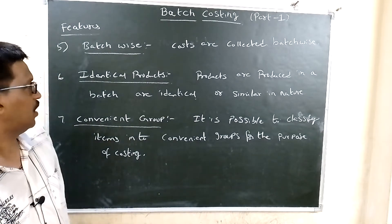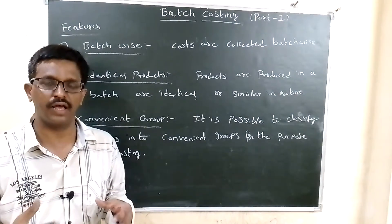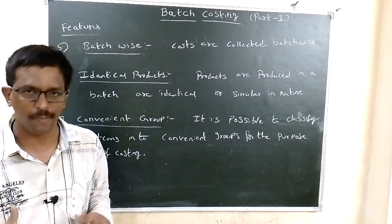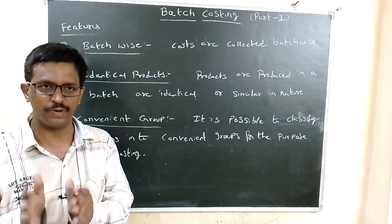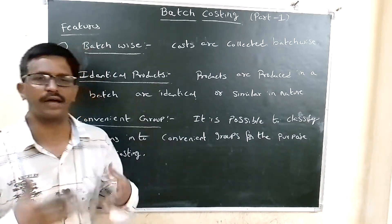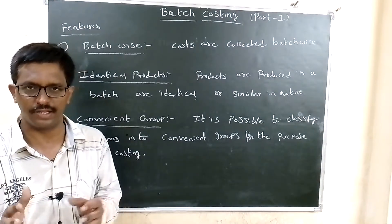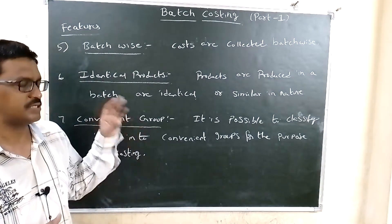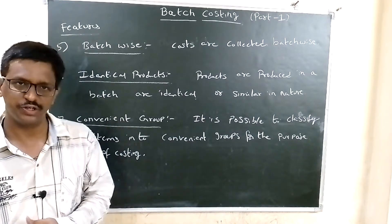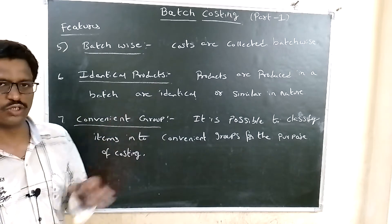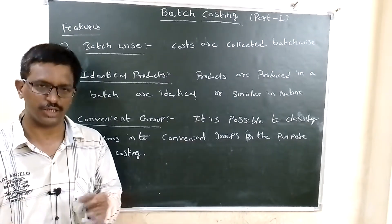Identical products: in batch costing, products produced in large quantity are similar types. Similar type products are produced in bulk quantity — these are identical products. Examples include soaps, cosmetic products, and many other products.